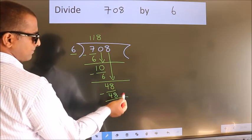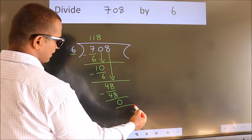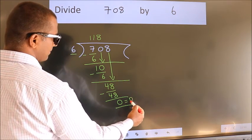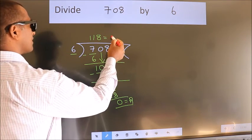No more numbers to bring down. So we stop here. This is our remainder. This is our quotient.